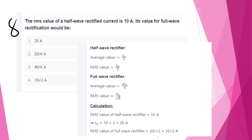Revisiting: the RMS value of a half-wave rectified current is 10A. Im = 10 × 2 = 20A. For full-wave: RMS = 20/√2 = 10√2 A.